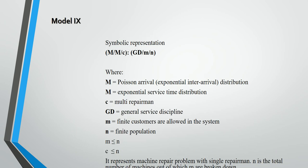Model 9 has the symbolic representation M/M/C:GD/M/N. Here, C represents multiple repairmen — unlike Model 8 with a single repairman, here there are more than one. GD represents general service discipline, M represents finite customers allowed, and N represents finite population. M should be less than or equal to N, and the number of repairmen should be less than or equal to the number of customers who have called for service.